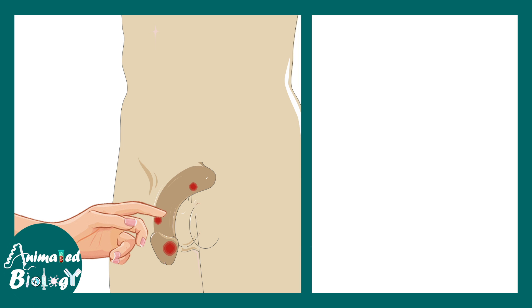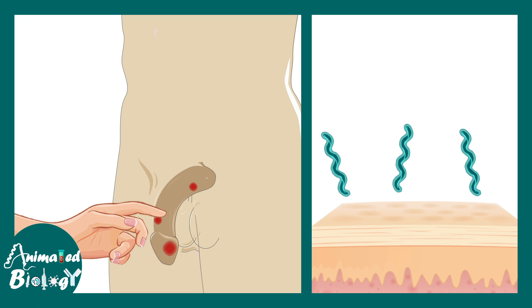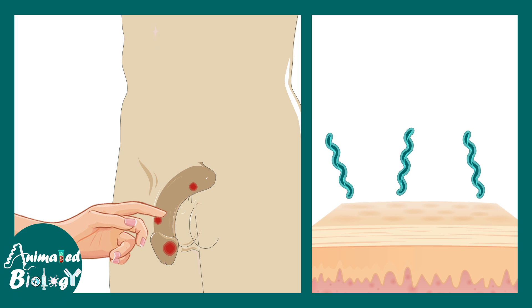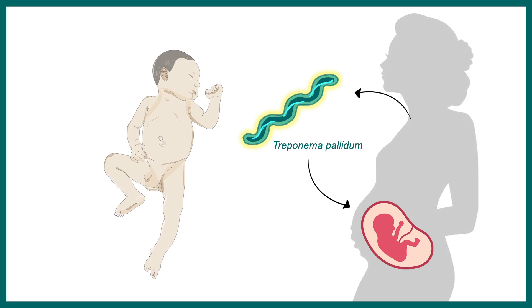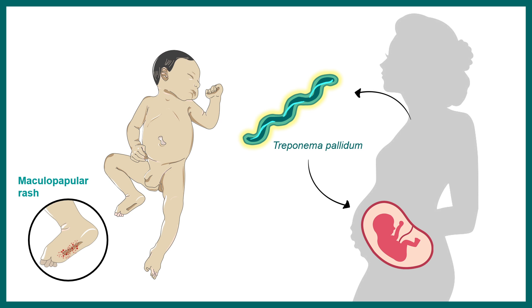During oral sex or other sexual activities, syphilis can be transmitted. Treponema can bore through mucus membranes and look for breaches in the epithelial tissue. Notably, Treponema can also be transmitted from mother to baby during birth. In babies, symptoms include maculopapular rash, hearing defects, neuritis, and other morphological features that can lead to complications in later life.